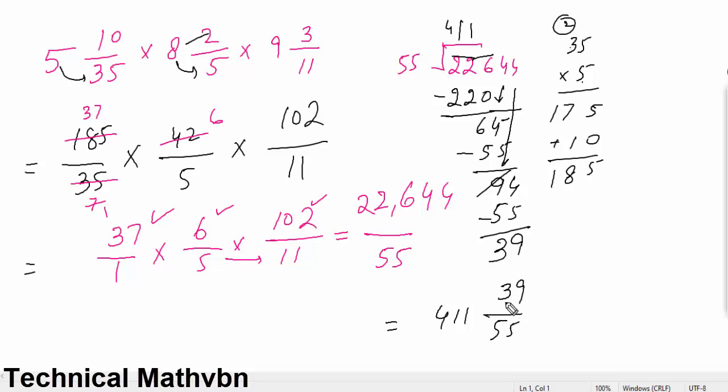Now our answer is correct. Checking the answer is correct. We will multiply 4, 11, multiply 5. So this will be 60. This will be 22,000, 6, 0, 5.